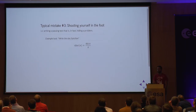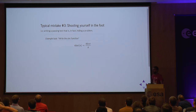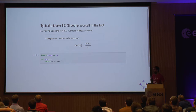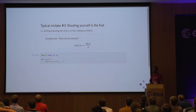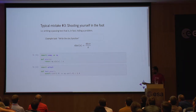Typical mistake number three is shooting yourself in the foot. Imagine you have the task of implementing the sinc function — I'm glad I don't need to apologize for putting math and code in a presentation. So you write the function, everything's going fine. If you want to do the test and you're feeling lazy on a Friday afternoon, you might say: I'm going to test that this works for x equals one. So you write this test: sinc(1.0) equals the formula.